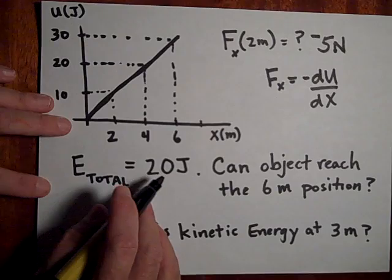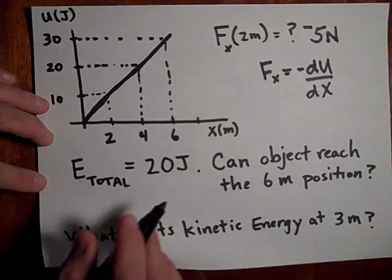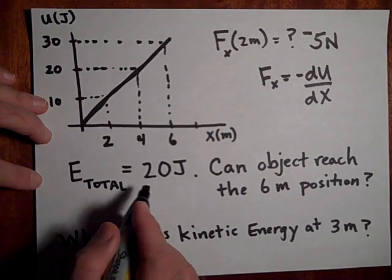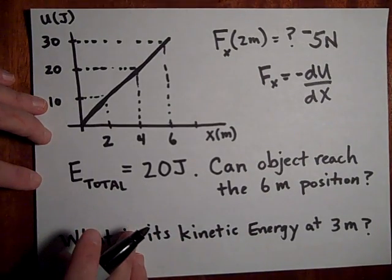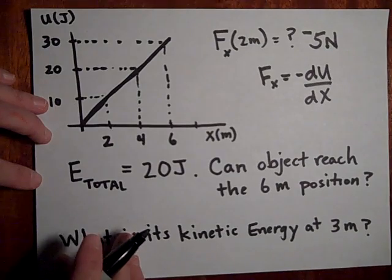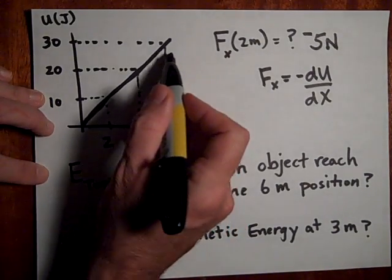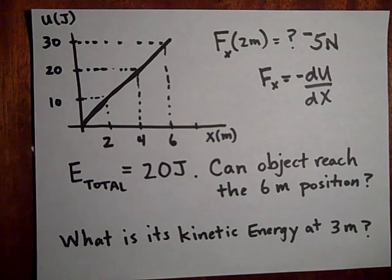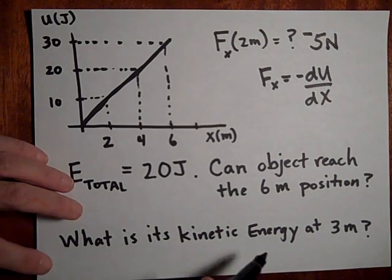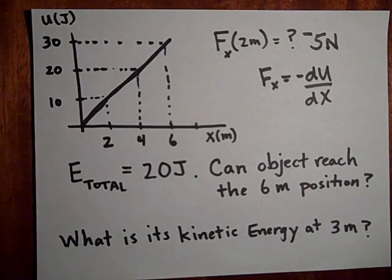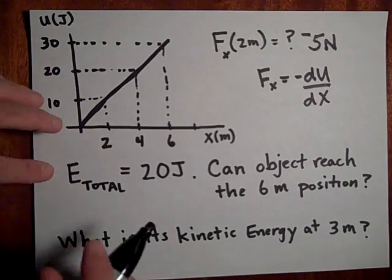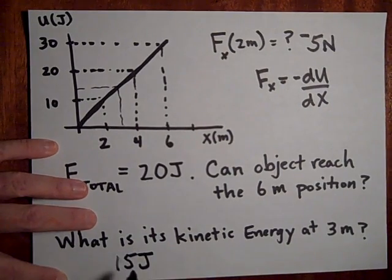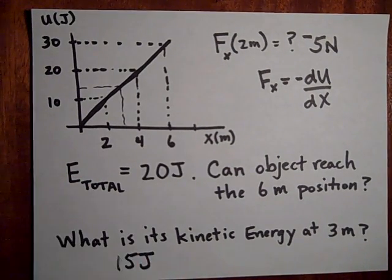Okay, if the total energy is 20 joules, can the object ever reach the 6 meter position? Go ahead and think about that for a second. Okay, the answer is no, because at 6 meters it's got 30, it would need to have 30 joules of potential energy, and you're told that it's got only 20 joules of total energy, so it can't. Hey, what's the kinetic energy at 3 meters? Okay, at 3 meters, if you go up and over, you have 15 joules of potential energy, and since you have a total of 20, you have 5 joules.